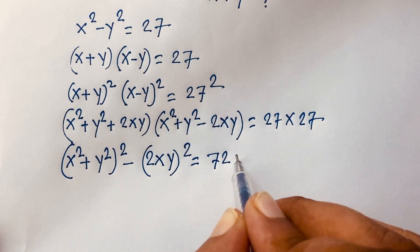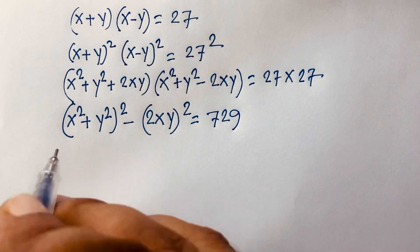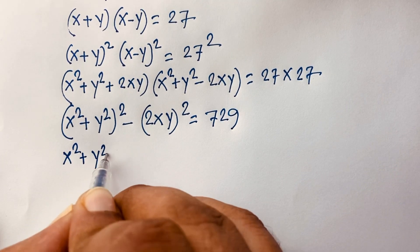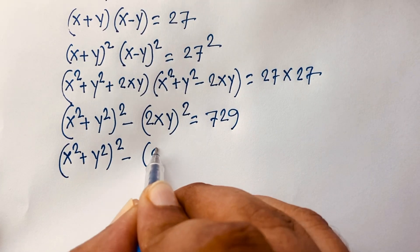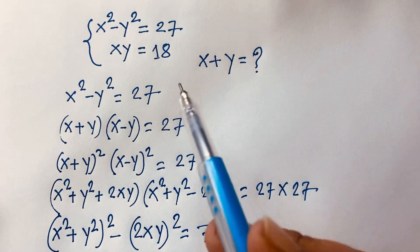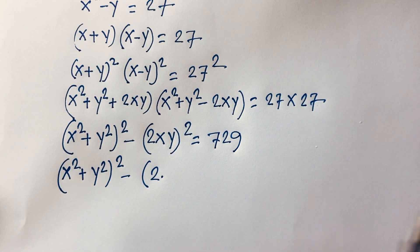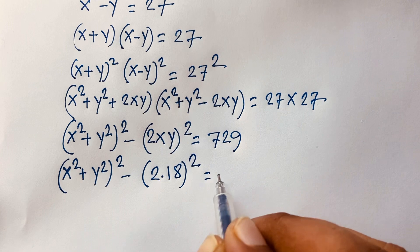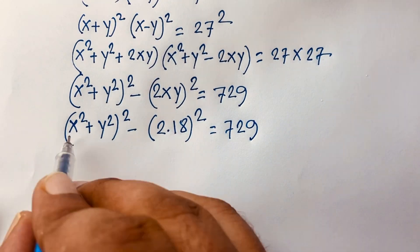It will be 729. Then this equation becomes: here is x squared plus y squared whole square minus 2xy whole square is equal to 729. Remember that xy equals 18, so I can say it will be x squared plus y squared whole square minus 2 times 18 whole square is equal to 729.